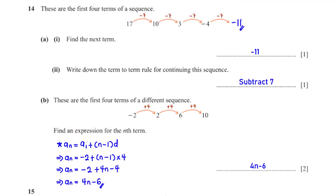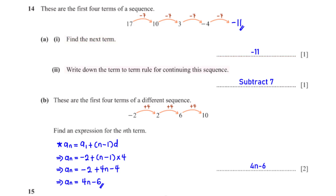These are the first four terms of a sequence. Find the next term. The terms have a constant difference of negative 7, so to get the next term we subtract 7 from negative 4, giving negative 11. The term-to-term rule for continuing this sequence is: subtract 7.